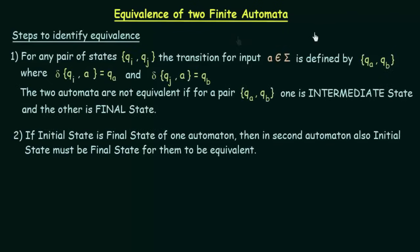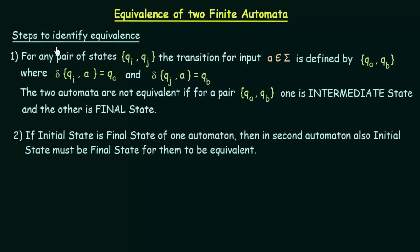The first step is: for any pair of states qi and qj, the transition for input a (belonging to sigma) is defined by qa, qb, where the transition from qi on a goes to qa, and the transition from qj on a goes to qb. The two automata are not equivalent if for a pair qa, qb one is an intermediate state and the other is a final state.